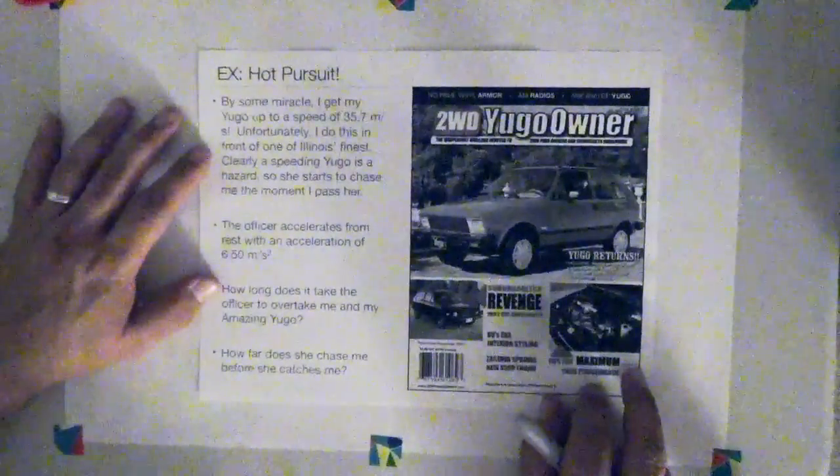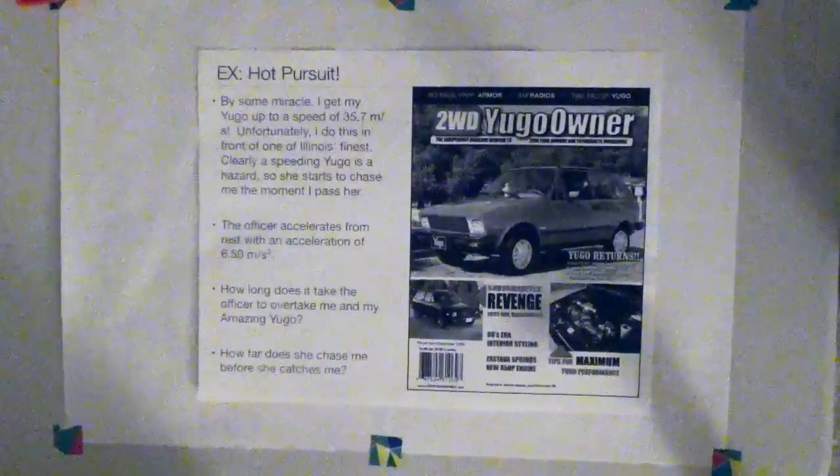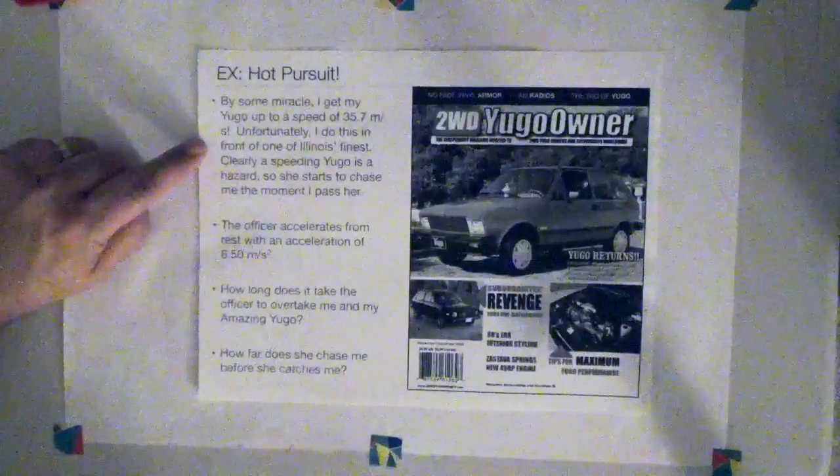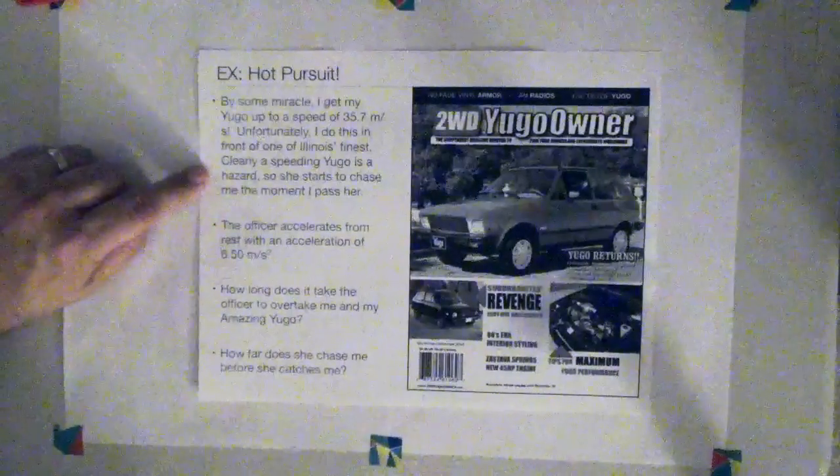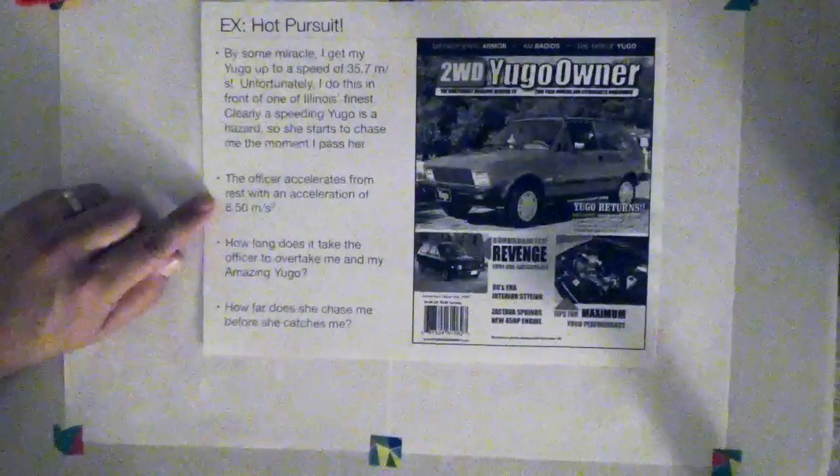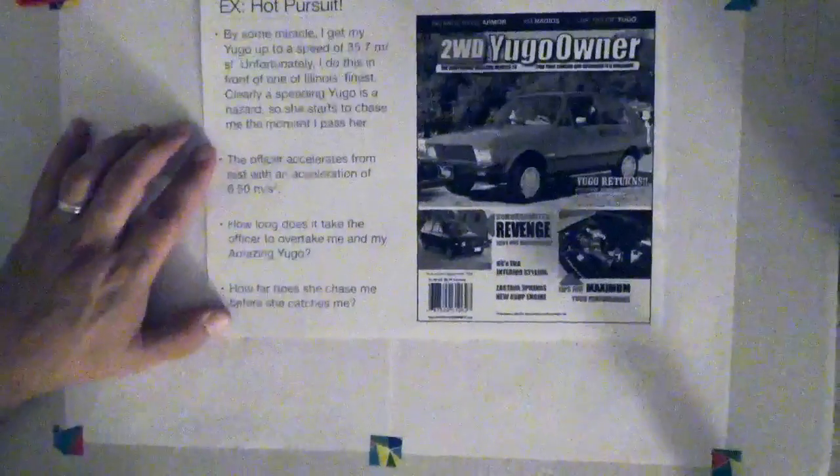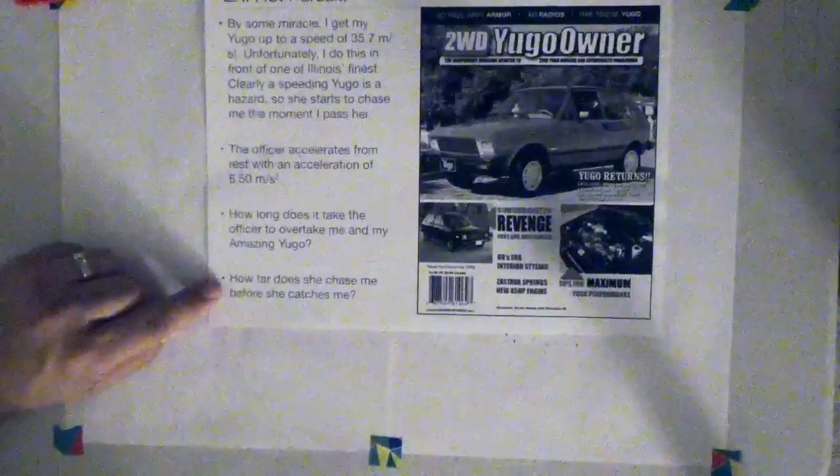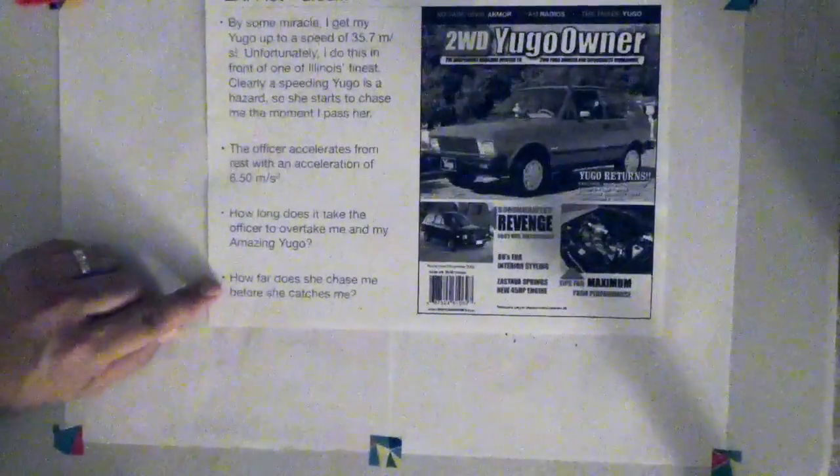Now, it is well known that I love Yugos, so this problem involves a Yugo. By some miracle, I get my Yugo up to a speed of 35.7 meters per second. Unfortunately, I do this in front of one of Illinois's finest, and clearly, since a Yugo is a speeding hazard, she starts to chase me at the moment that I pass her. So the officer accelerates from rest with an acceleration of 6.50 meters per second per second. And what we want to know is, how long does it take the officer to overtake me and my amazing Yugo? And the second thing we're asked to find is, how far does she chase me before she actually catches me?